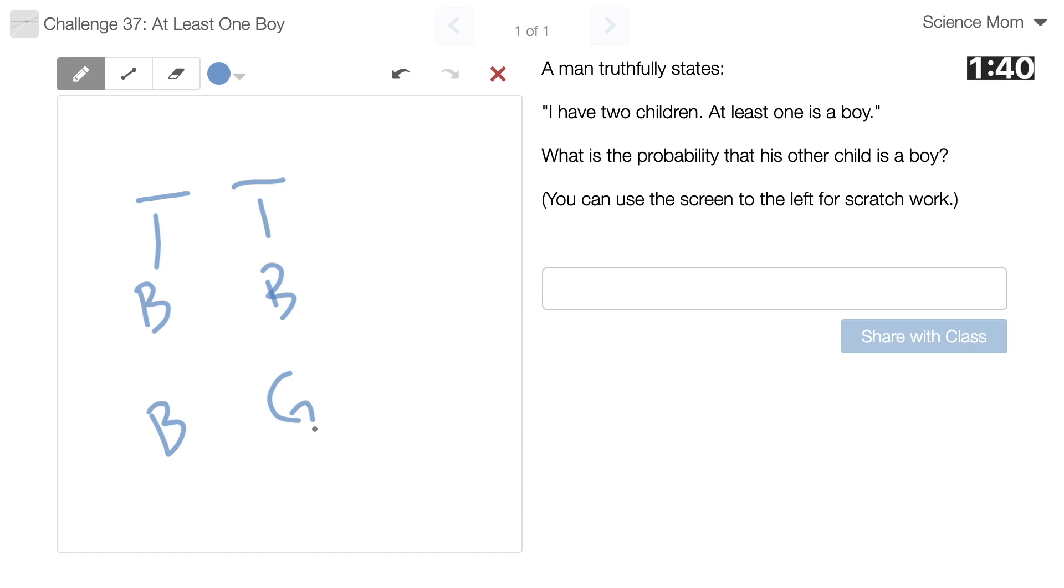What is the probability that his other child is a boy? I am guessing the answer is not 50-50. But that's my intuitive answer. That if he has two kids, one is a boy, that we're just looking at what the probability is that the other one is a boy and it would be one half.